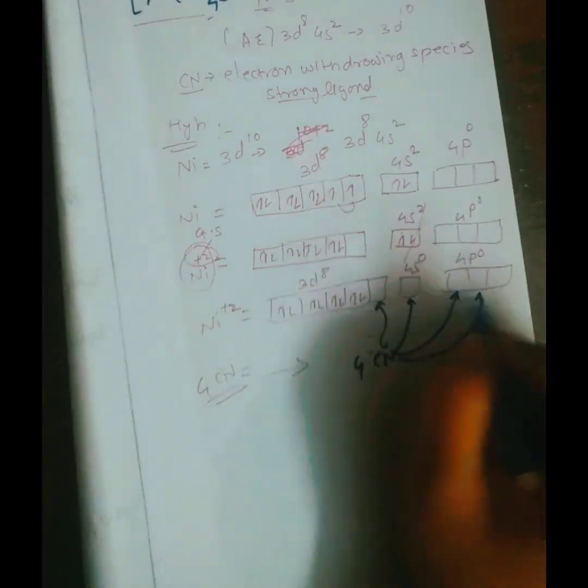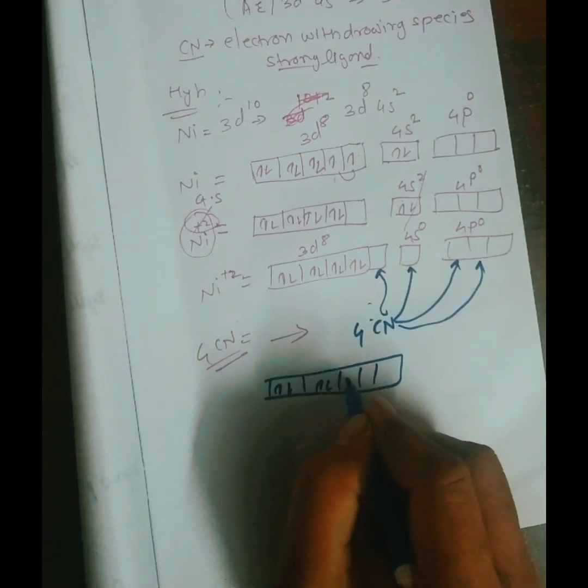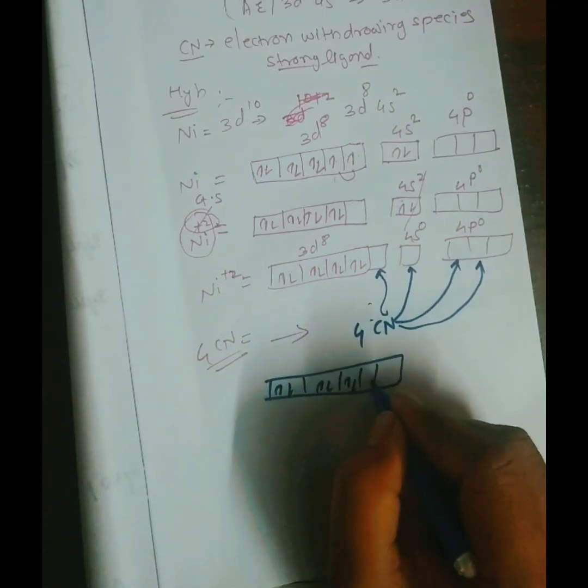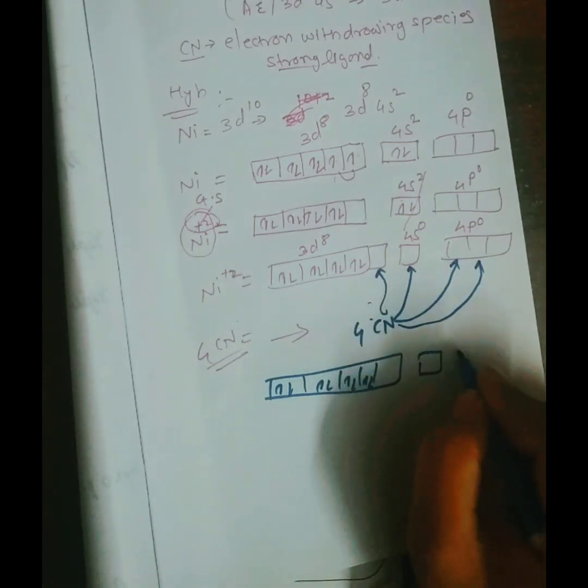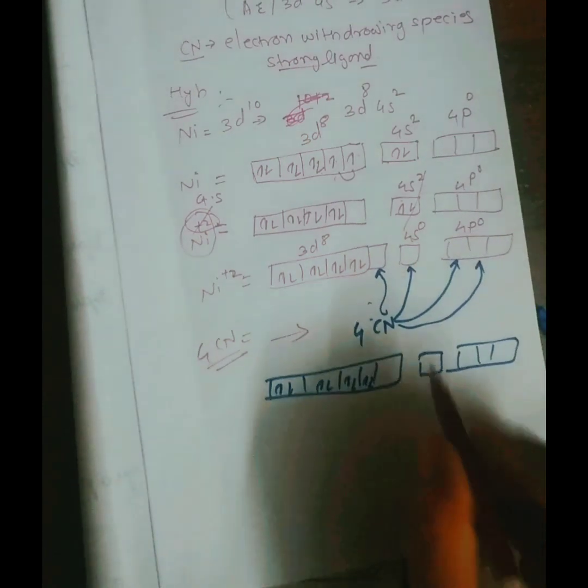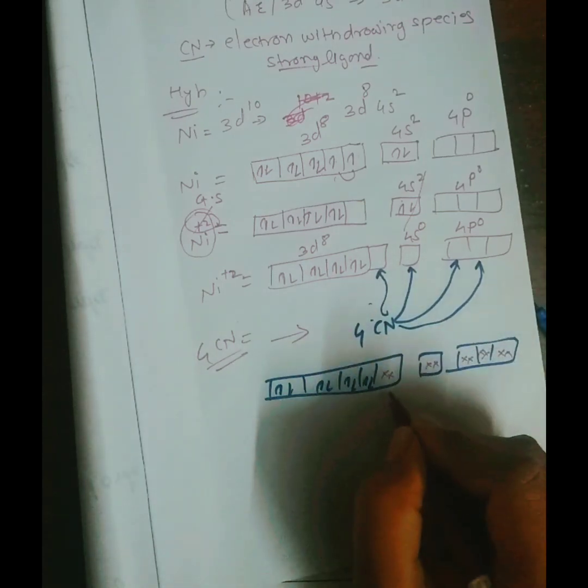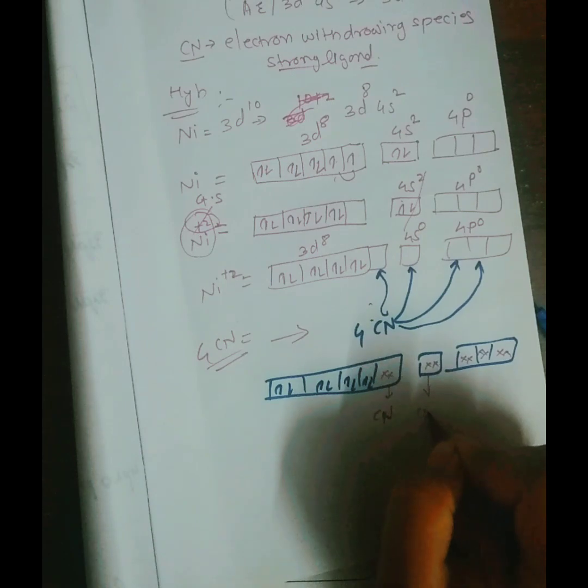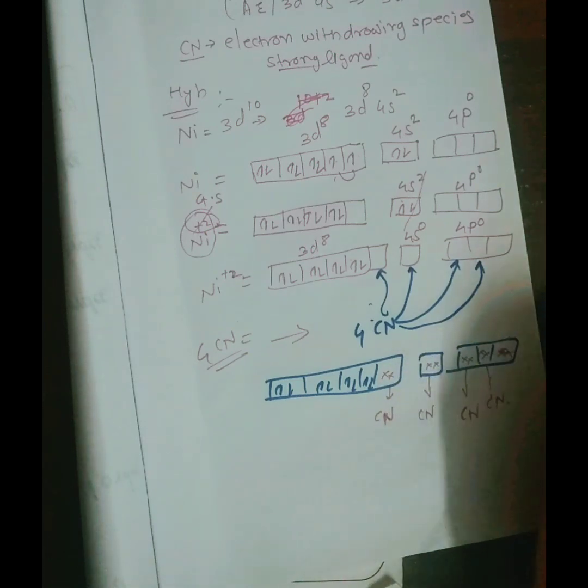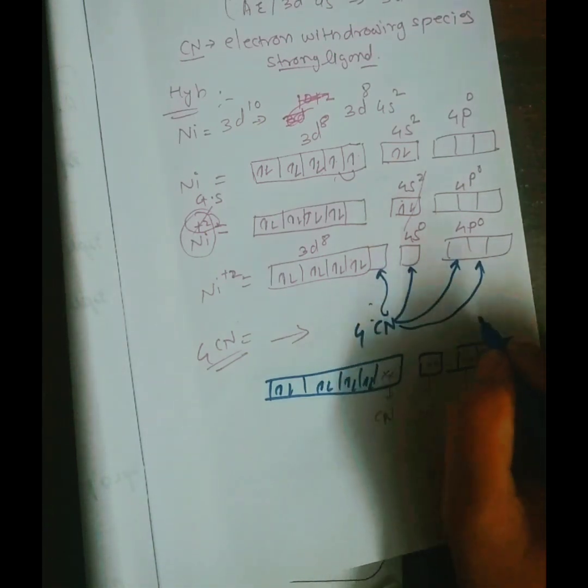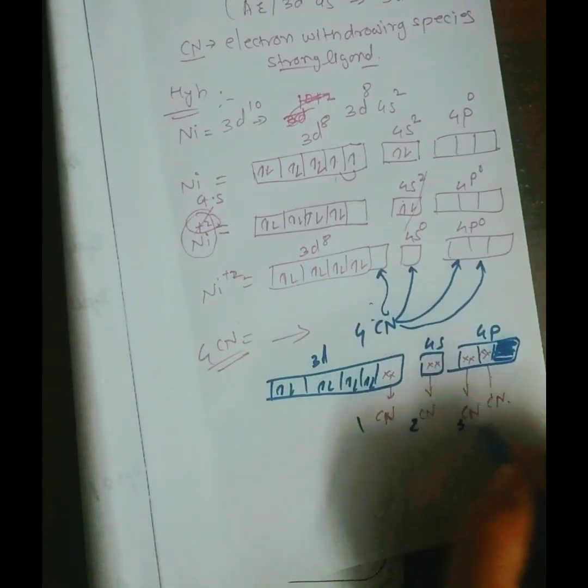Will occupy this empty orbital. So electronic configuration will become 8 electrons, and these are the orbitals which were occupied by cyanide. We can denote by this symbol: first cyanide, second cyanide, third cyanide, and fourth cyanide. Here are empty orbitals of the 4p orbital. This is 4s and this is 3d: 1, 2, 3, 4.